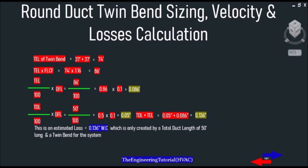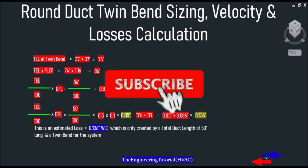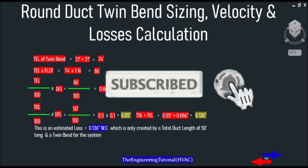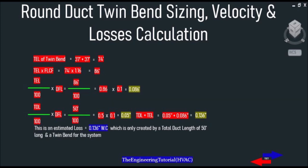So this is the estimated loss created by the total duct length of 50 feet and the tee-band for the system we just calculated. That's it for today — I appreciate you watching this video.